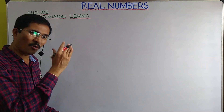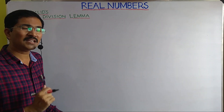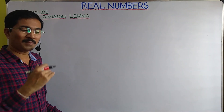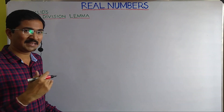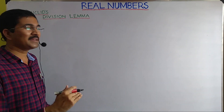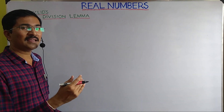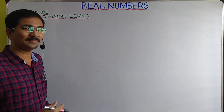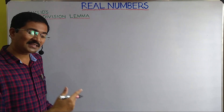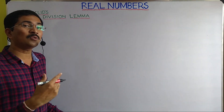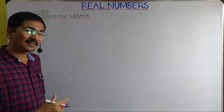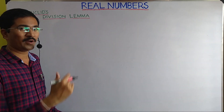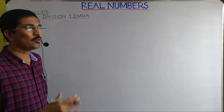We don't have to study all the numbers at once. We go step by step — first natural numbers and integers, then rational numbers, then irrational numbers and so on.